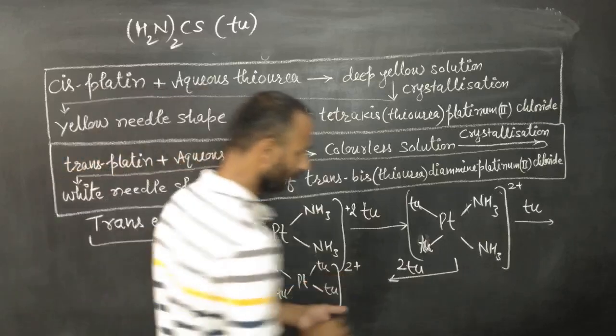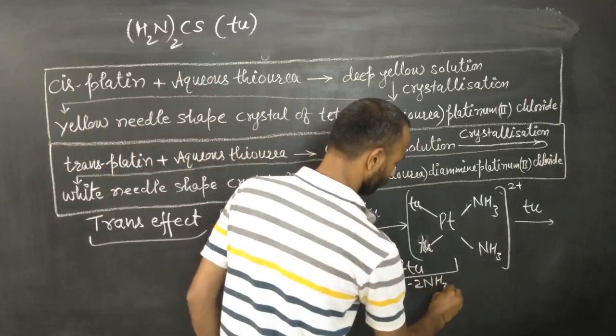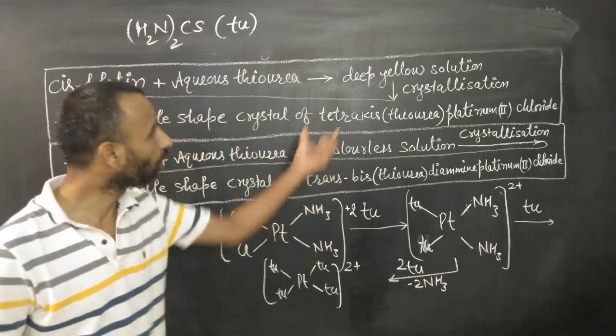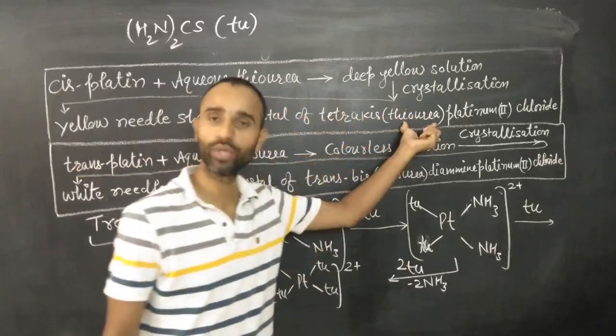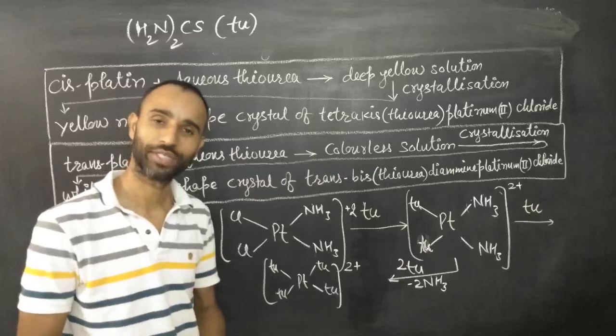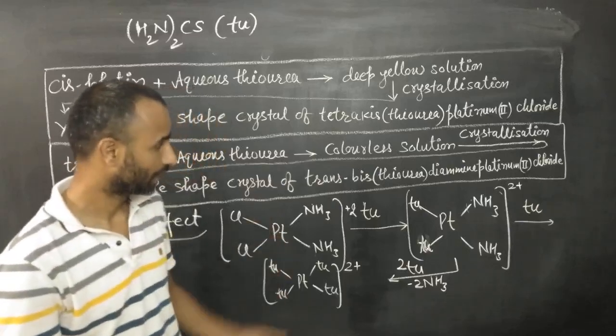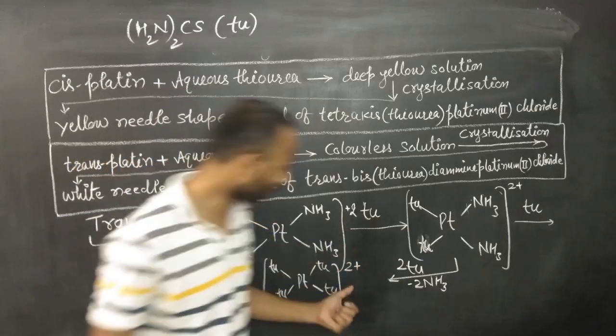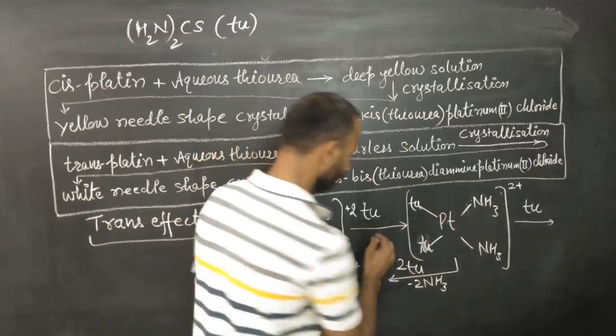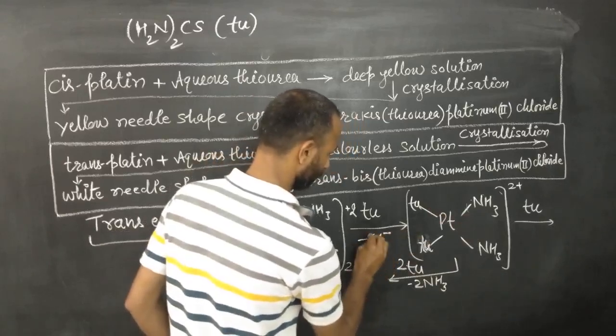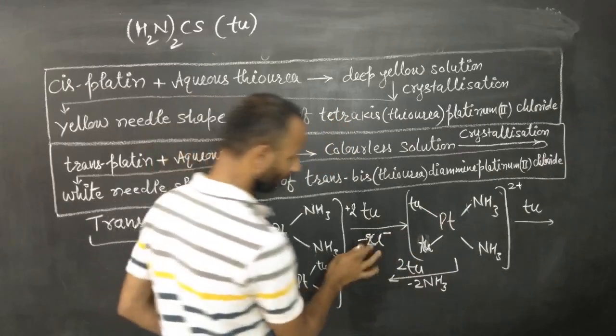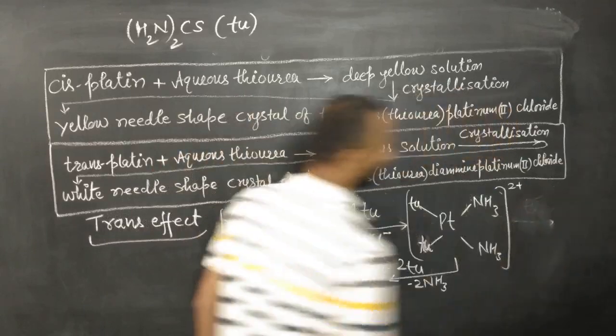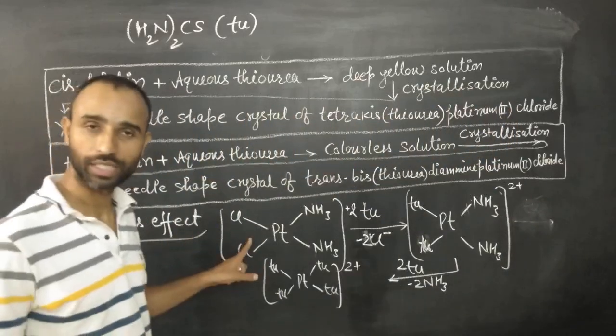So ammonia are replaced by thiourea. So we get yellow needle-shaped crystals of tetrakis thiourea platinum(II) chloride. See, there are along with that these chlorine, Cl-negative ions which are removed here. So this is the first for cisplatin.